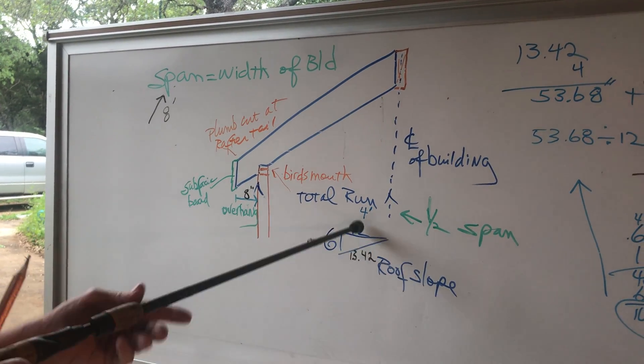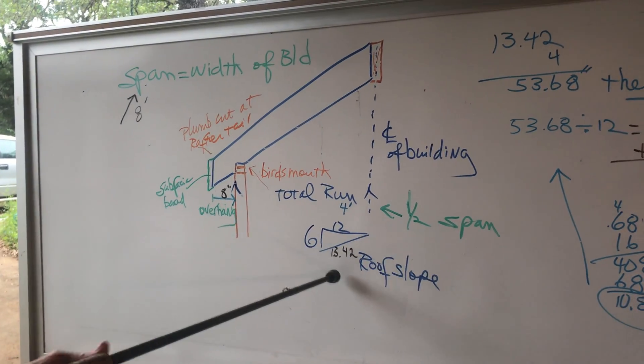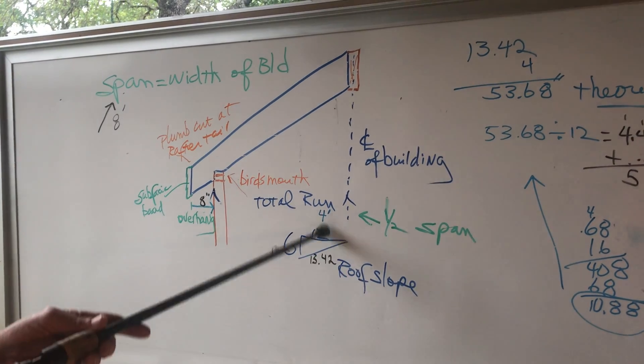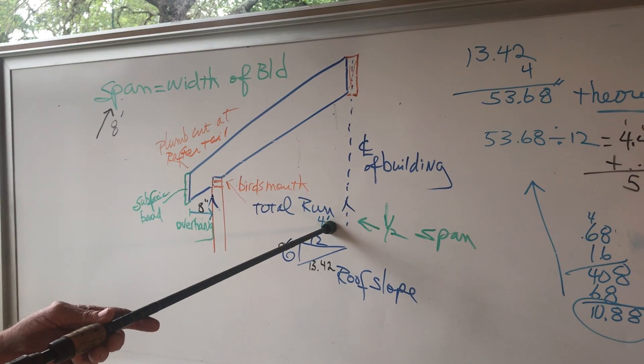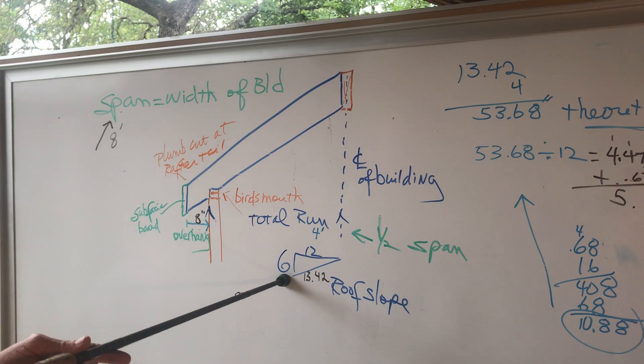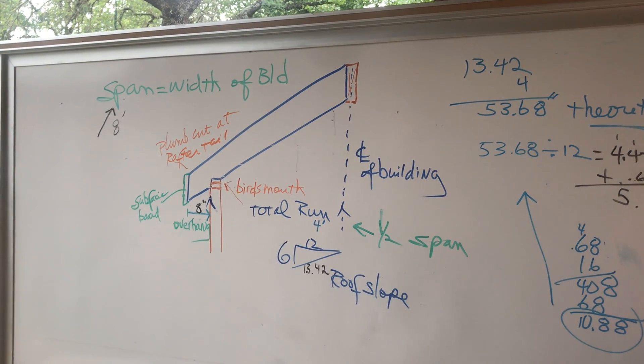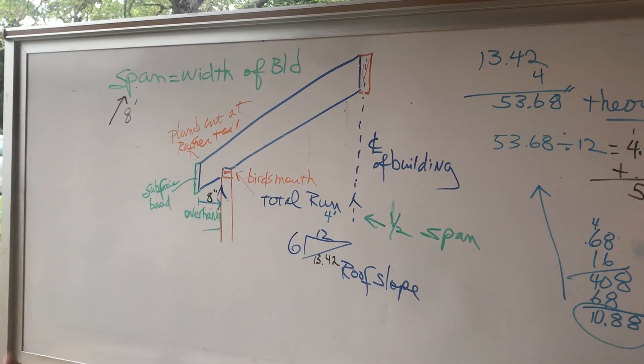So I need, how many of these do I need? I need 4 of them. 4 units of rafter length per 4 units of 12 inches of run and 4 units of 6 inches of rise.